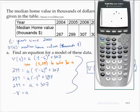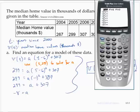Let's check that. y equals negative 8 times x minus 6 squared plus 307. Let's see if that's a reasonable model. That looks pretty good.